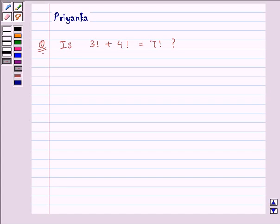Hi and how are you all today? The question says is 3 factorial plus 4 factorial equal to 7 factorial.